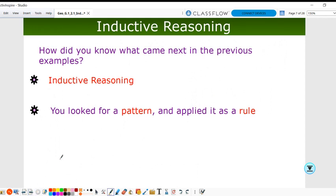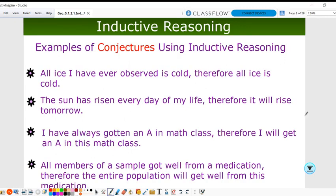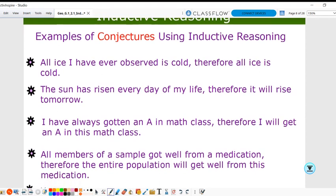We use patterns to identify what will come next. That's using inductive reasoning. You look for a pattern and then apply a rule to the pattern. Here are some examples of conjectures that use inductive reasoning, and we'll talk a little bit about what a conjecture is.